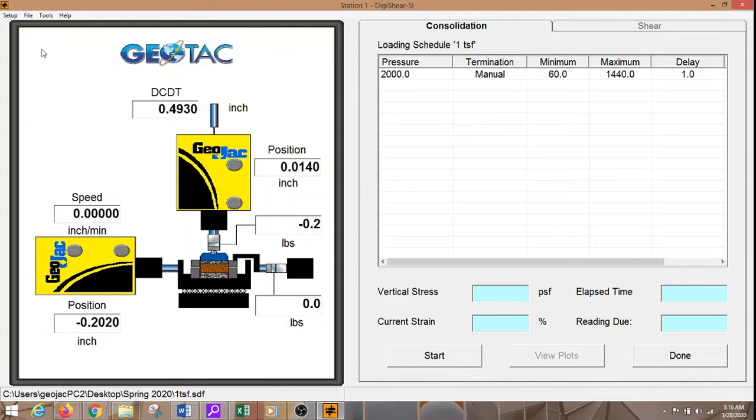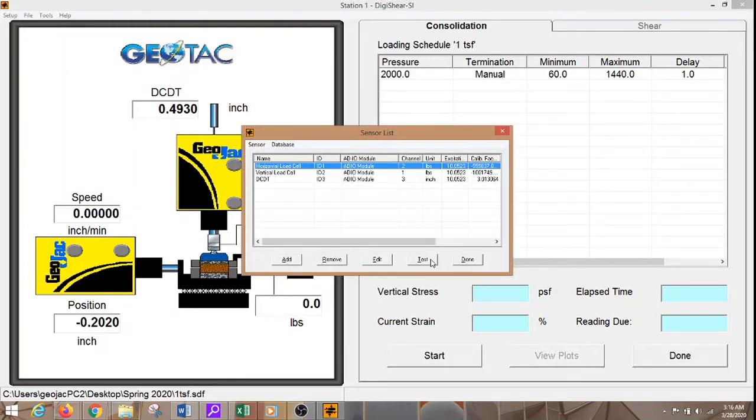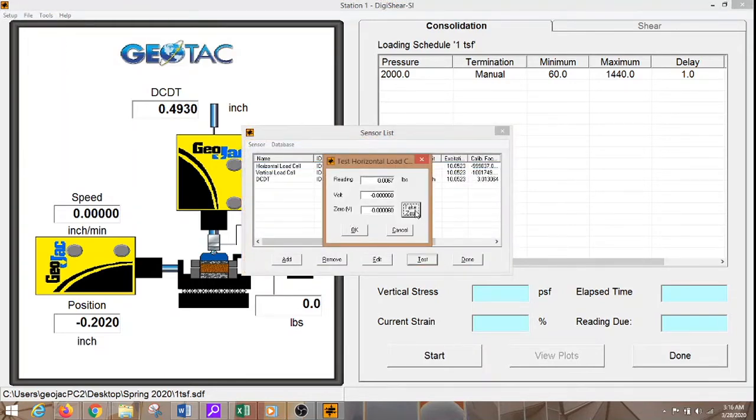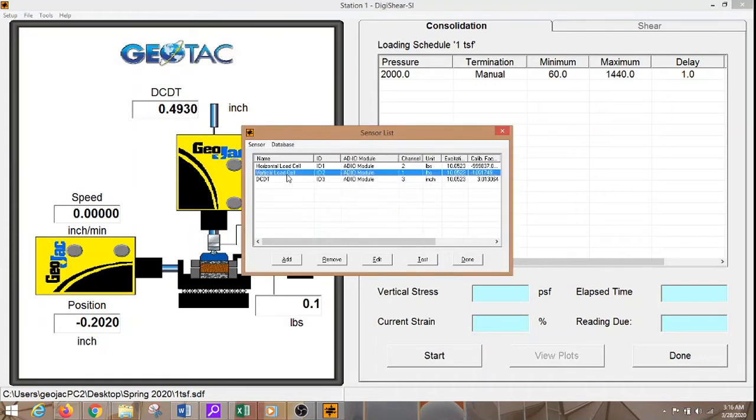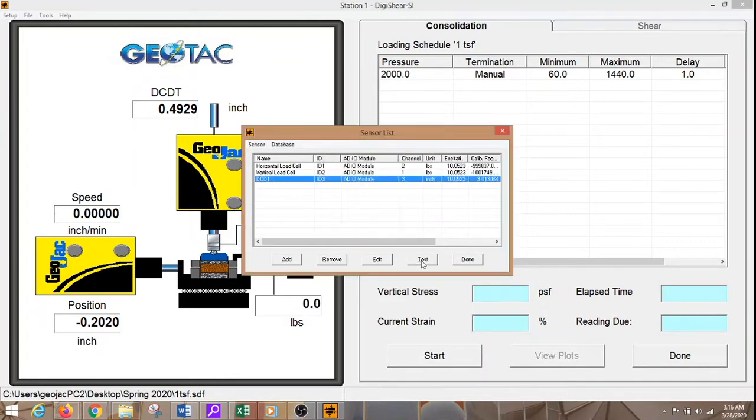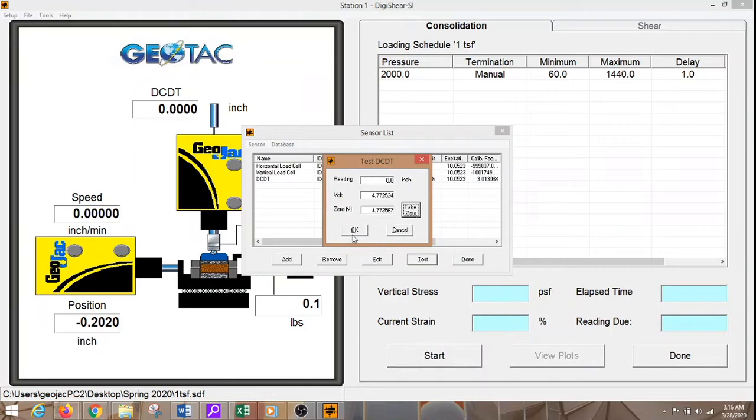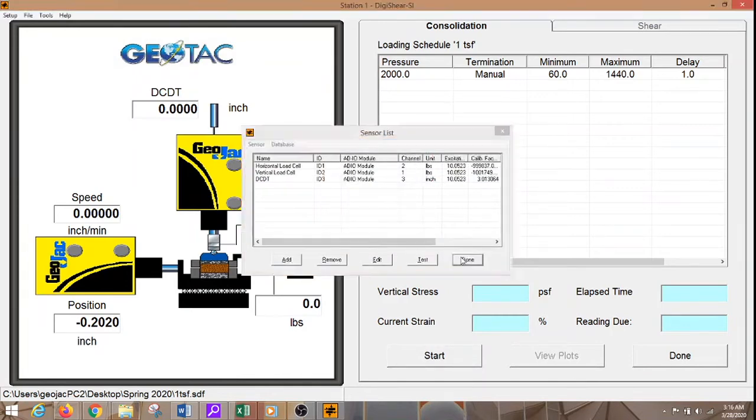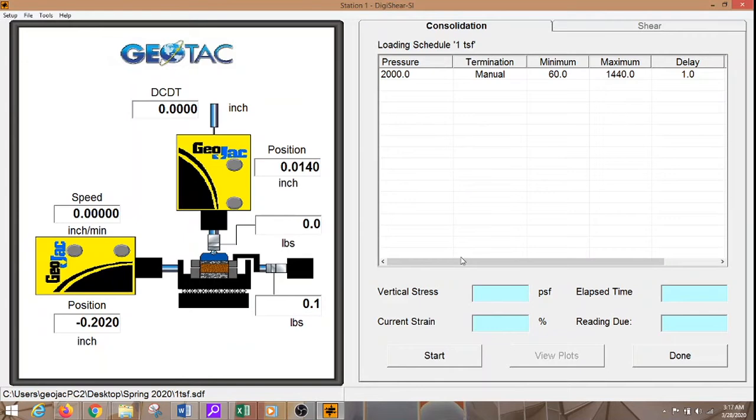Then I go to the sensors and set all to zero. Take a zero reading. OK. Vertical load cell. Take a zero reading. OK. DCDT. Take a zero reading. OK. Now we are ready to start the consolidation. After a while when the consolidation is done then we will move over to the shear. Now start consolidation.